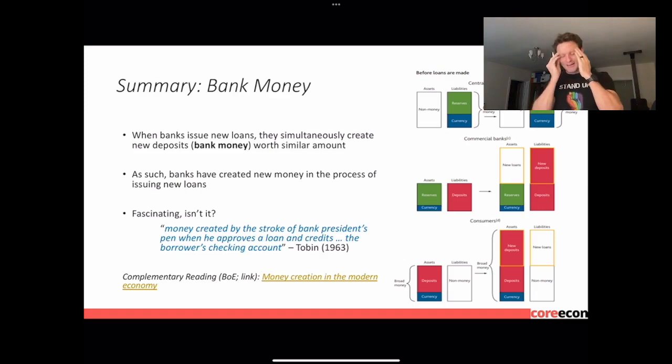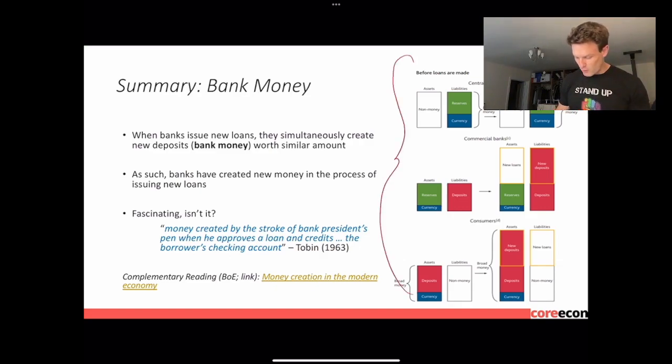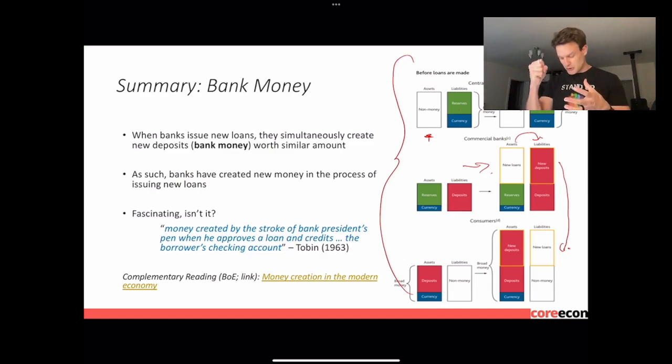A summary here with respect to bank money is when banks issue new loans, they simultaneously create new deposits to bank money worth similar amounts. As such, banks have created new money in the process of issuing new loans. That's fascinating. So Tobin, who went on to win a Nobel Prize in economics, he says that money created by the stroke of bank president's pen when he approves a loan and credits the borrower's checking account. You can also see a complimentary reading from the Bank of England about modern money creation. This little figure here summarizes exactly what we're talking about.